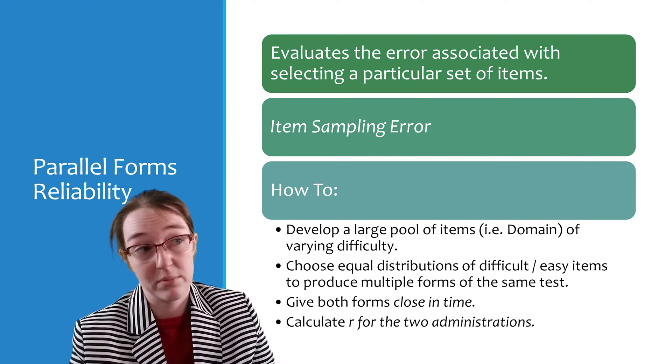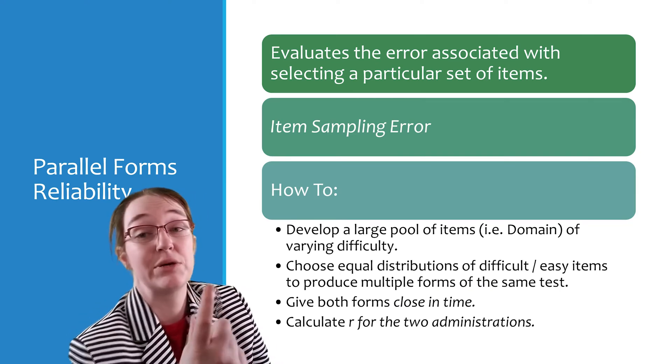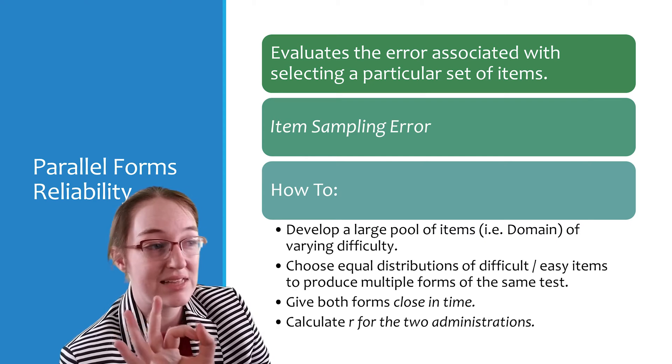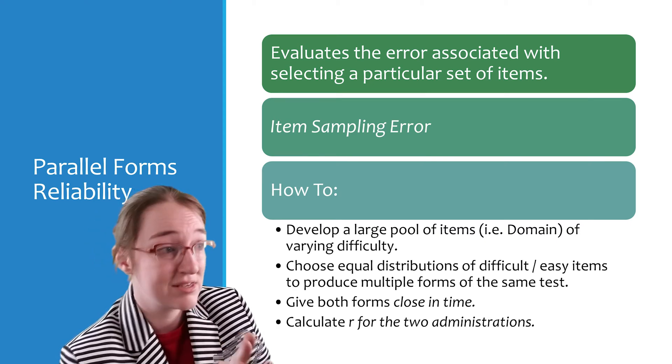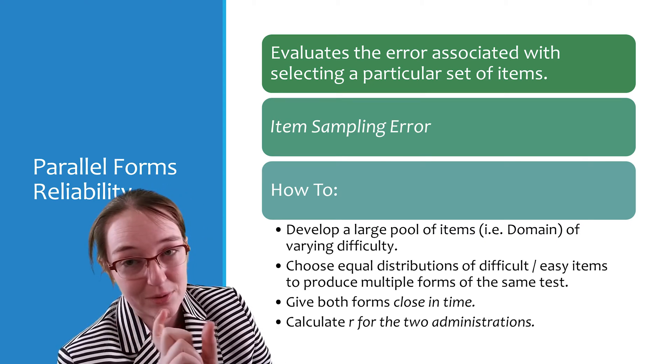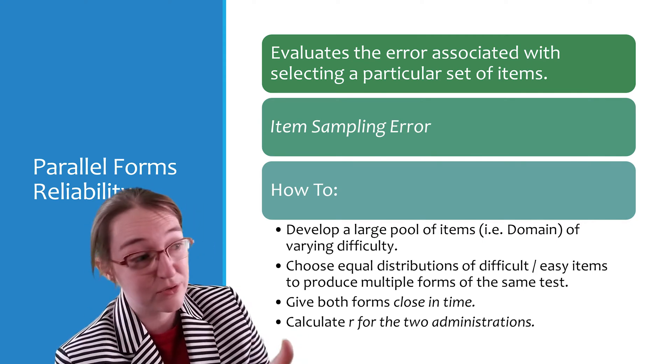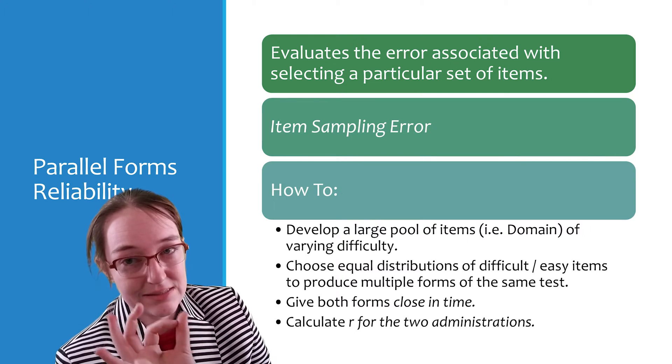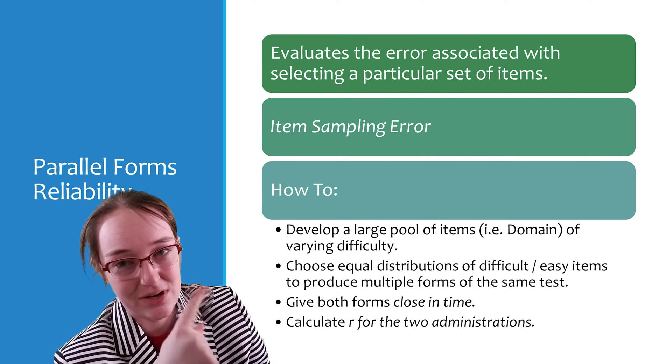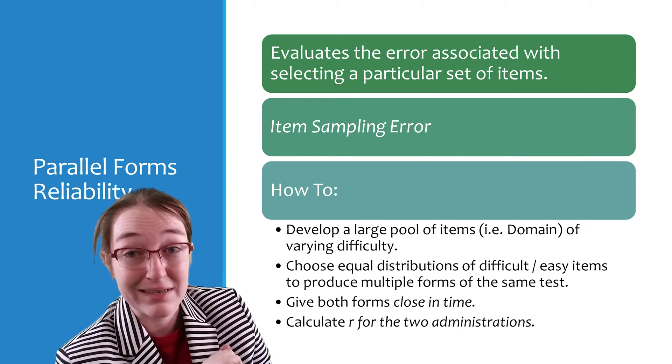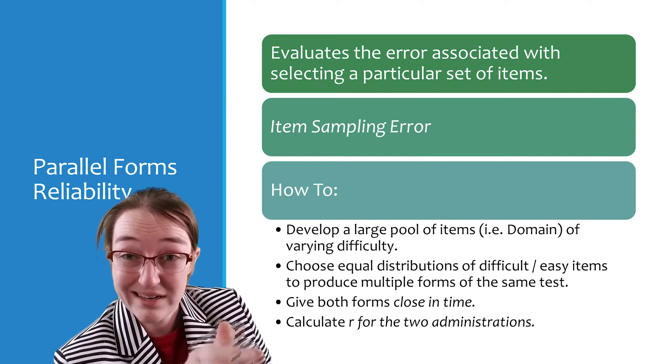Parallel form reliability is evaluating the error associated with selecting a particular set of items. In other words, this is item sampling error. And so how do you do this? You generate a huge pool of questions. And yes, I realize this is the exact same slide as you saw in the preamble, but I'm reiterating it here and recording it a second time.